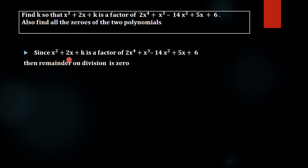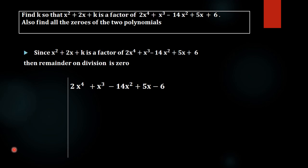It is given that x² + 2x + k is a factor of the given polynomial. Then we will get remainder 0 on division. So we will divide the polynomial by the factor, find the remainder — which will include a term k — and by equating it to 0 we will find the value of k. We will use the long division method.